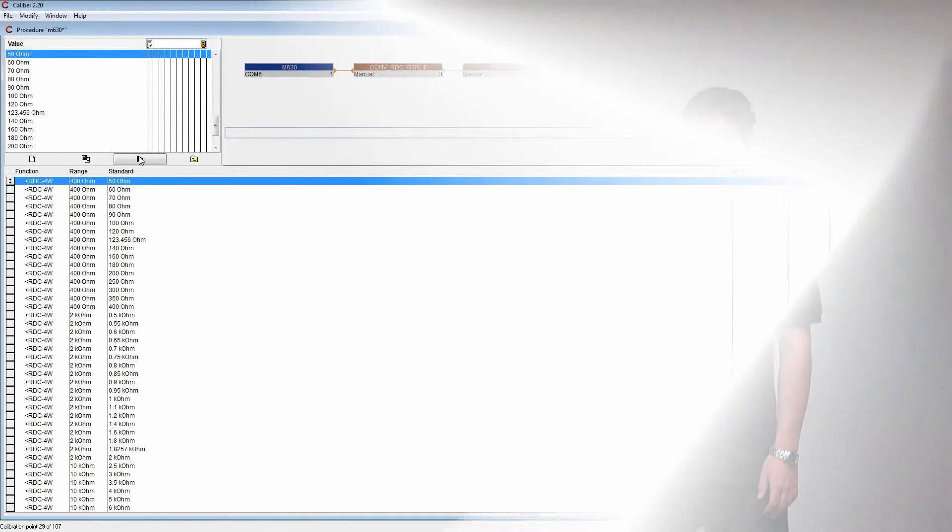To make the calibration even easier, you can use our calibration software Caliber, which enables you to simply create your own calibration procedures, execute them and export the calibration data for further processing.